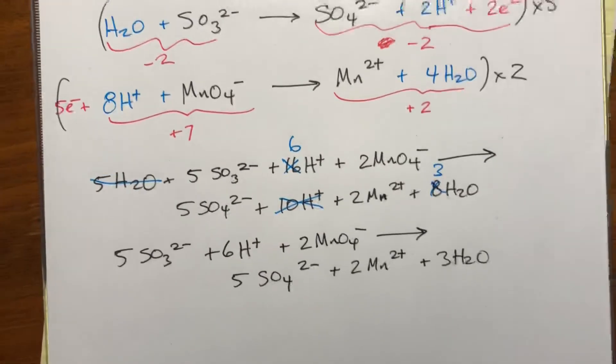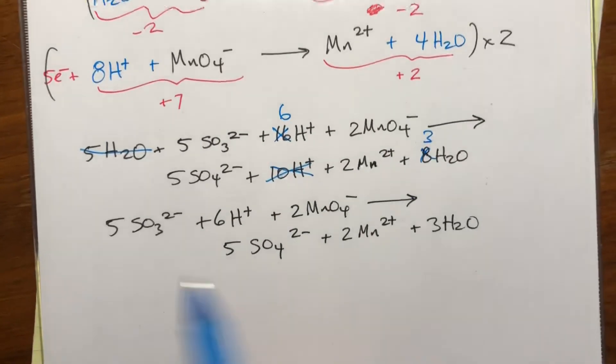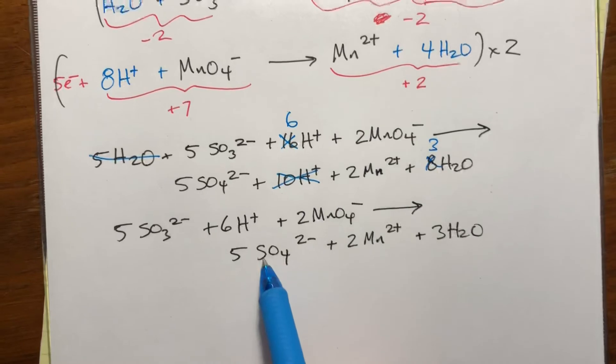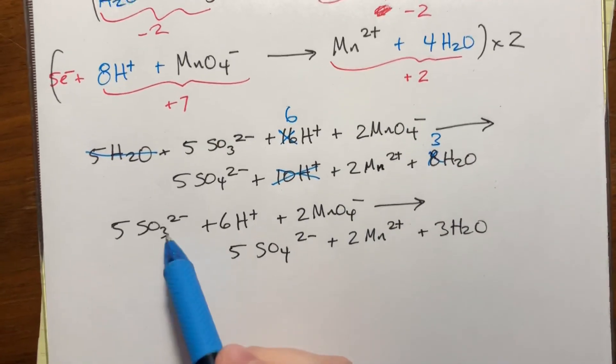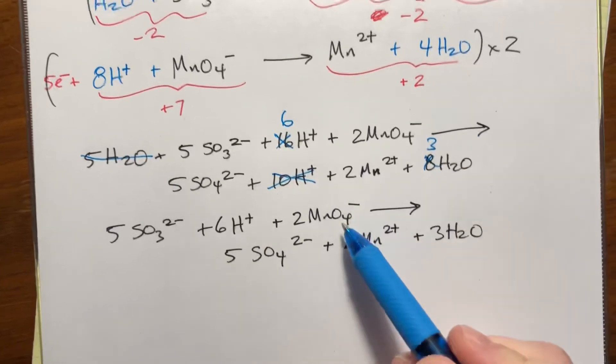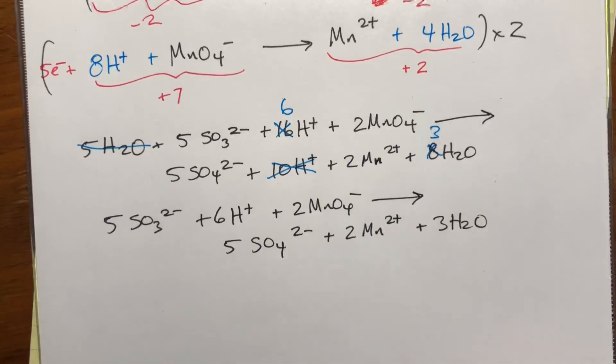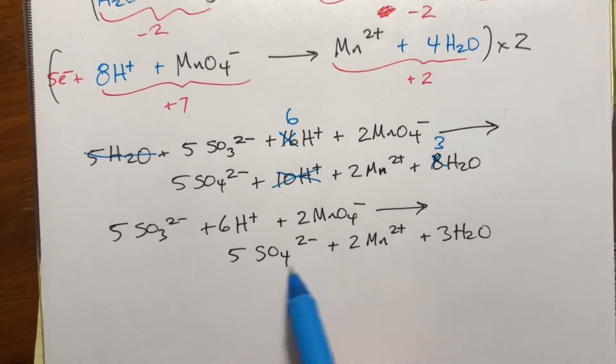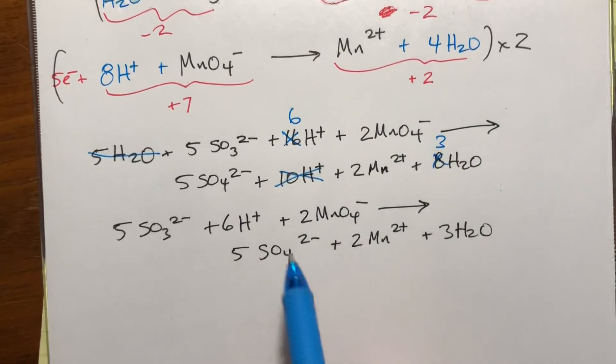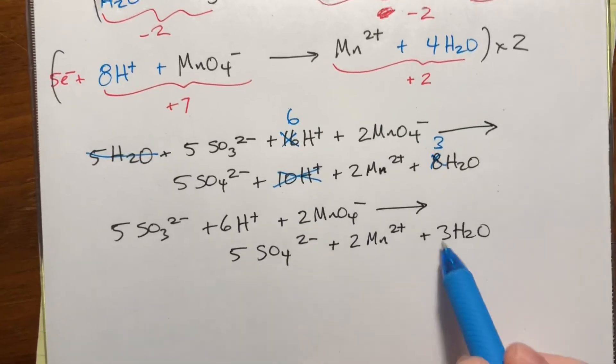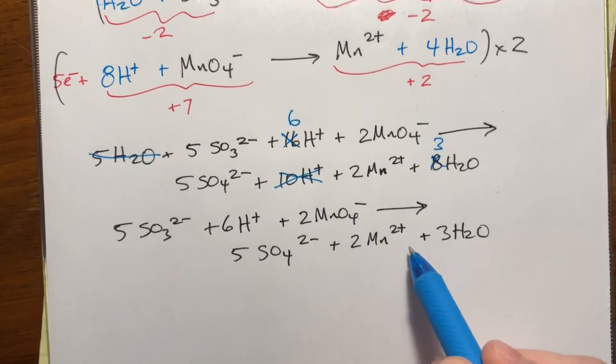Hopefully this is balanced. Let's double check it. We have five sulfurs, five sulfurs. Oxygen, I guess we have 15 plus eight, it's at 23. Here we have 20 plus three would be 23, so we're good. Hydrogens, we have six here, six here, two Mn, two Mn.